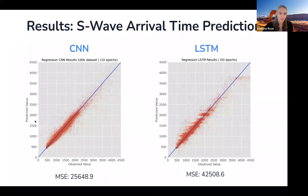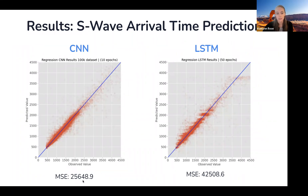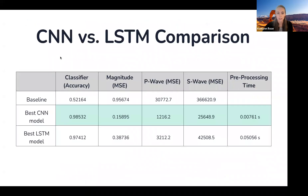For the S-wave arrival time prediction, here are graphs of the predicted value versus the observed value for the CNN and for the LSTM. A perfect prediction is indicated by the blue line, and you can see that the mean squared error for the CNN is quite a bit lower than the mean squared error for the LSTM, so the CNN was the better model here.